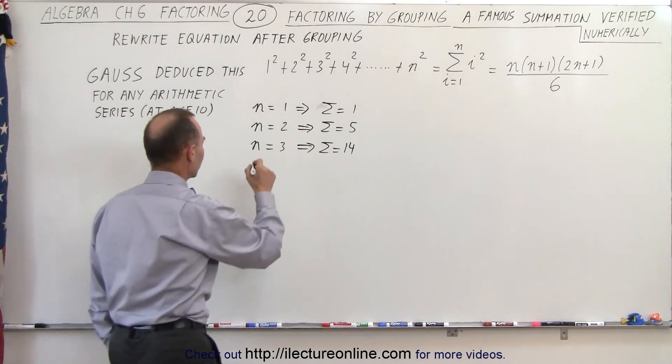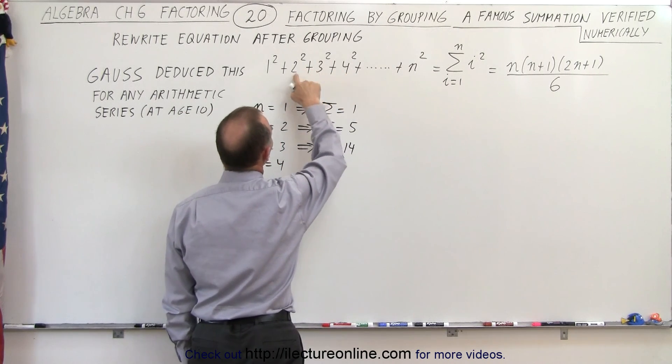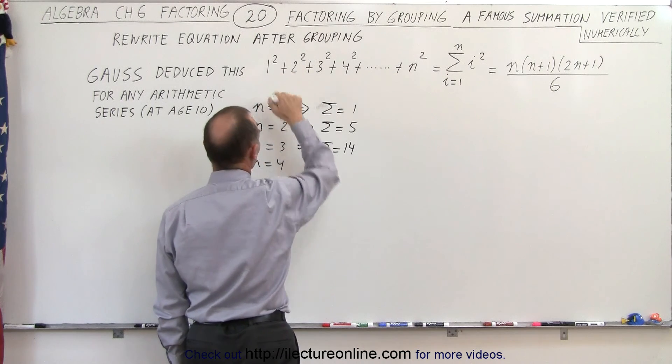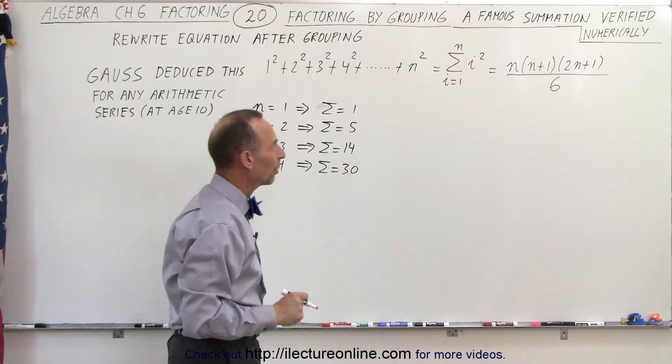Let's do one more just for good measure. When n equals 4 we get 16 plus 9 which is 25 plus 4 which is 29 plus 1 which is 30. So the summation should equal 30. All right let's see what we get.